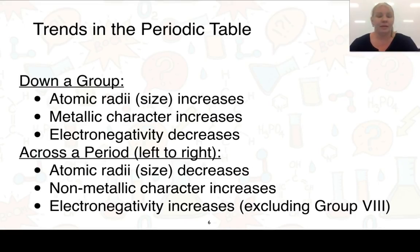Trends in our periodic table are what we're going to look at next. As we go down a group, we will see that the atomic radii or the size increases. We see also the metallic character increases, but our electronegativity decreases.